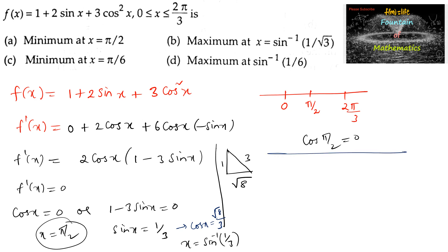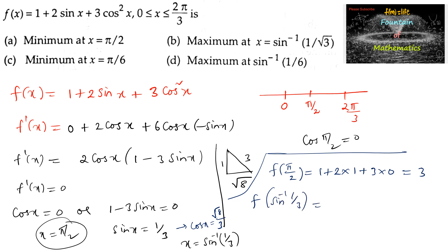Now evaluating: f(π/2) = 1 + 2·sin(π/2) + 3·cos²(π/2) = 1 + 2·1 + 3·0 = 3. And f(sin⁻¹(1/3)) = 1 + 2·(1/3) + 3·(8/9) = 1 + 2/3 + 8/3 = 13/3.